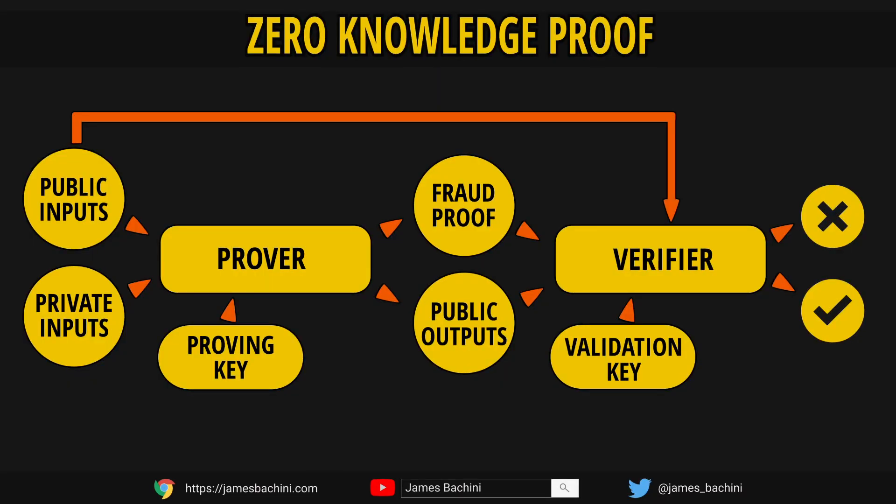For developers, zero-knowledge proof systems are built using circuits. A proving key and a validation key is generated using a handshake ceremony between parties, where various participants contribute to the key. These can be thought of in a similar way to private-public key pairs in elliptic curve cryptography.